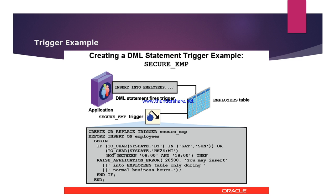As shown in this diagram, a simple example for security purposes: we can specify a particular time so that when a user is going to perform DML operations on the database, we can prevent them from doing operations during non-business hours or non-working days. This is all about triggers. Thank you.